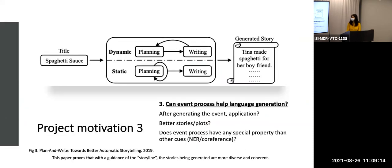The last motivation is: if we've already been successful in generating such sequences, what can we use them for? One thing, as seen in the previous paper, is a plan-and-write style. Basically, you could plan those script-like structures beforehand, before you generate the entire story. These scripts or events can help you generate better, more coherent stories. So we want to see if, after obtaining these sequences, we can apply them to generate stories, and whether it would be better than if we don't have information about such sequences.